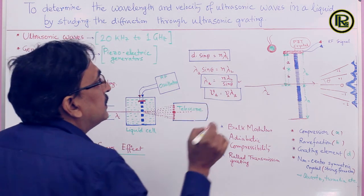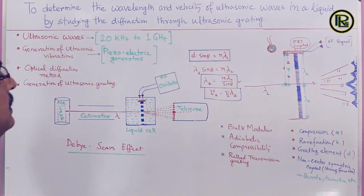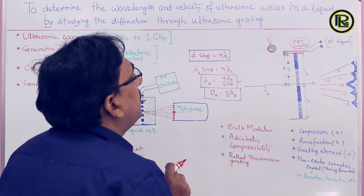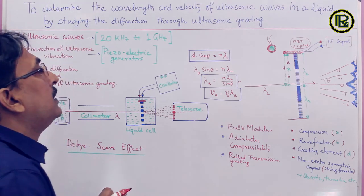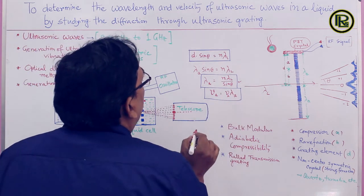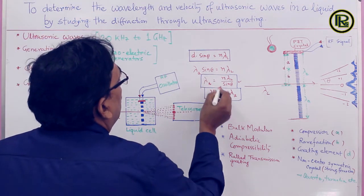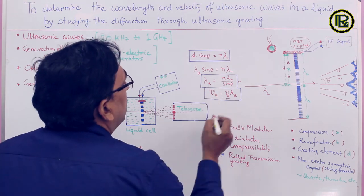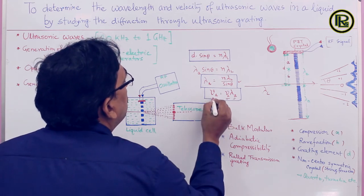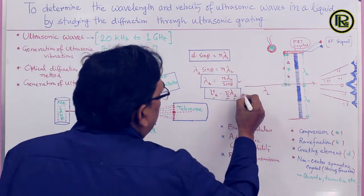As we know the frequency of the RF signal applied to the piezoelectric crystal — because that RF signal frequency should match the natural frequency of the crystal — we know the frequency ν_A of the ultrasonic wave. Having obtained the wavelength λ_A, the product ν_A × λ_A gives the velocity of the ultrasonic wave. This is the second working formula.